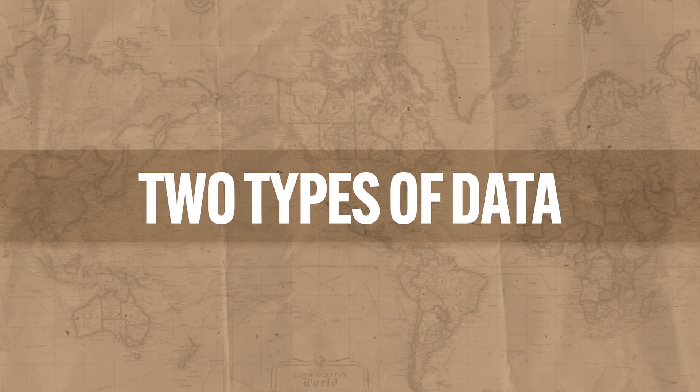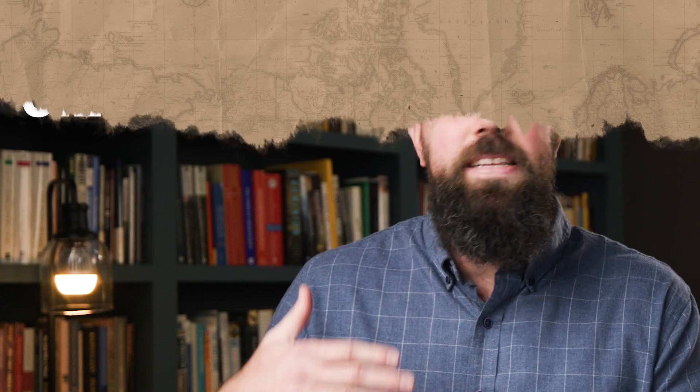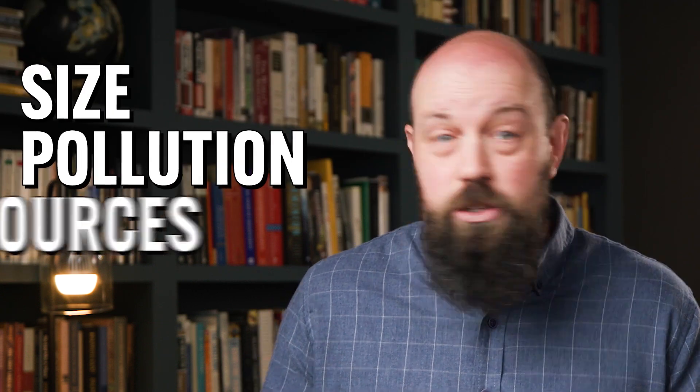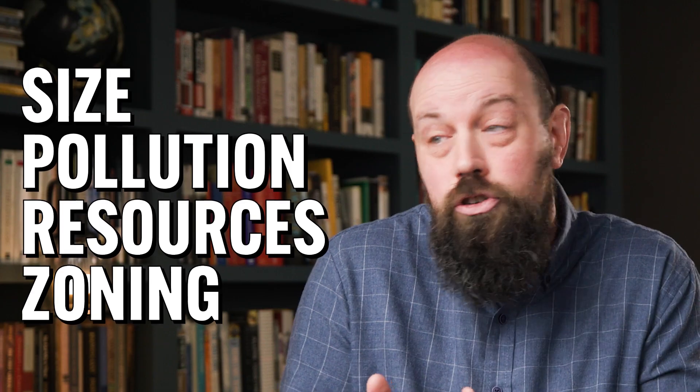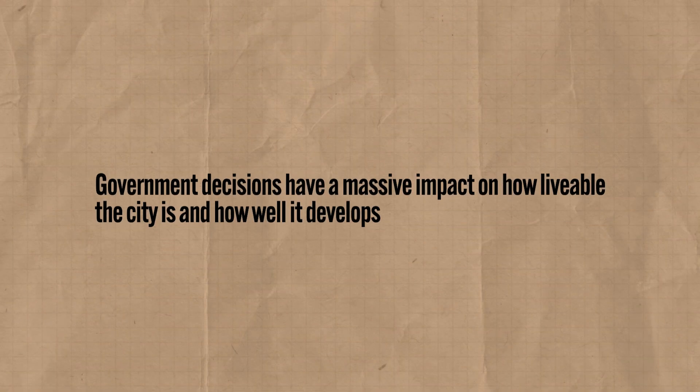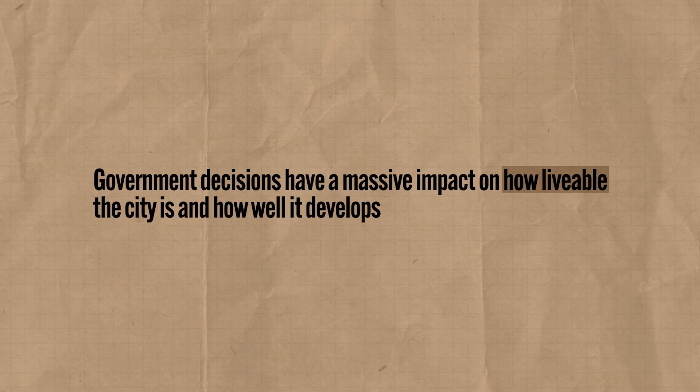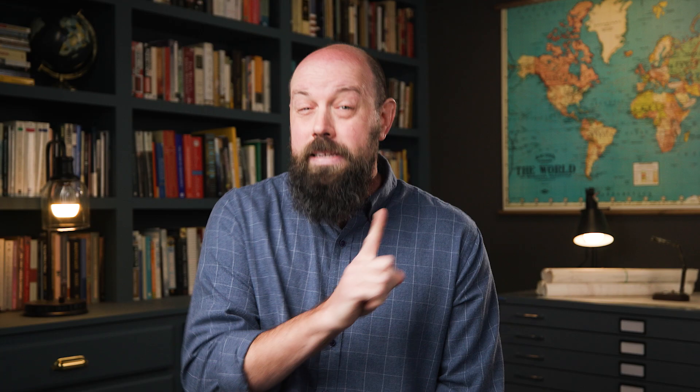First off, let me remind you that we've been talking all about cities — how big or small they are, how nasty the pollution can be, whether there's enough resources to support everyone, whether that piece of land should be residential or commercial, and on and on. And as it turns out, urban governments play a large role in how their cities develop. They decide whether an apartment complex or a factory can be built on a certain plot of land, whether to improve infrastructure or let it be — and all those decisions have a massive impact on how livable the city is and how well it develops.